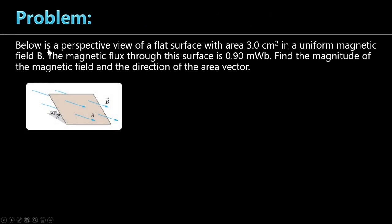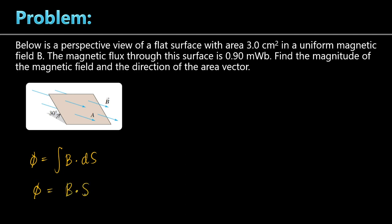Problem 10. Below is a perspective view of a flat surface with an area of 3 square centimeters in a uniform magnetic field. The magnetic flux through the surface is given — the question asks for the magnitude of the magnetic field and the direction of the area vector. The flux phi equals B dot A, which equals BA cosine theta, where theta is the angle between the magnetic field and the area vector.